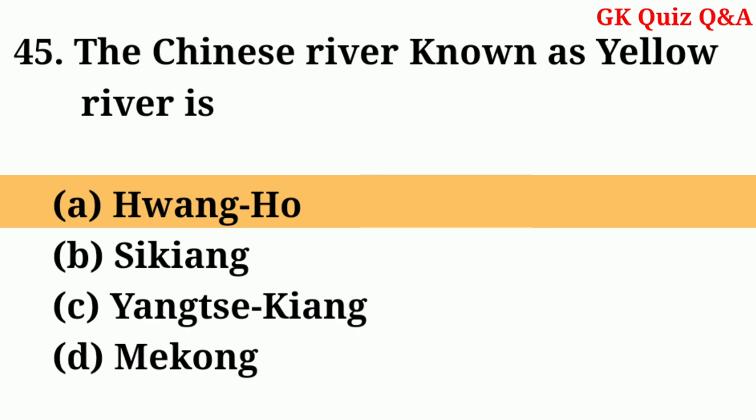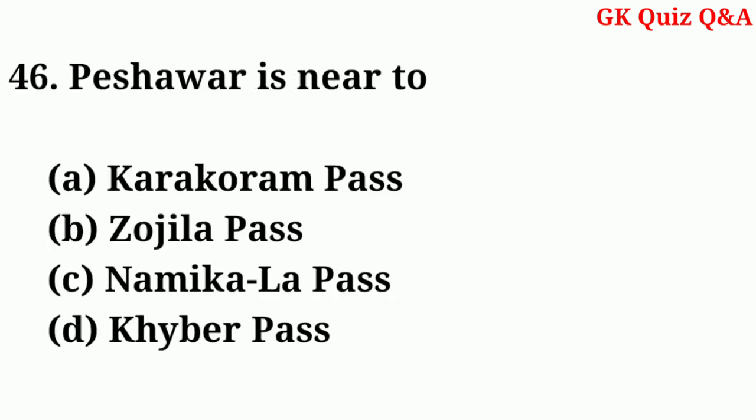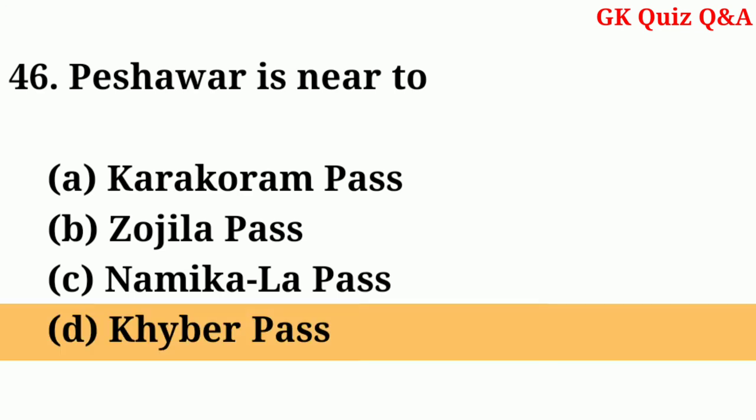The Chinese river known as the Yellow River is? Answer: A — Huang Ho. Peshawar is near to? Answer: D — Khyber Pass.